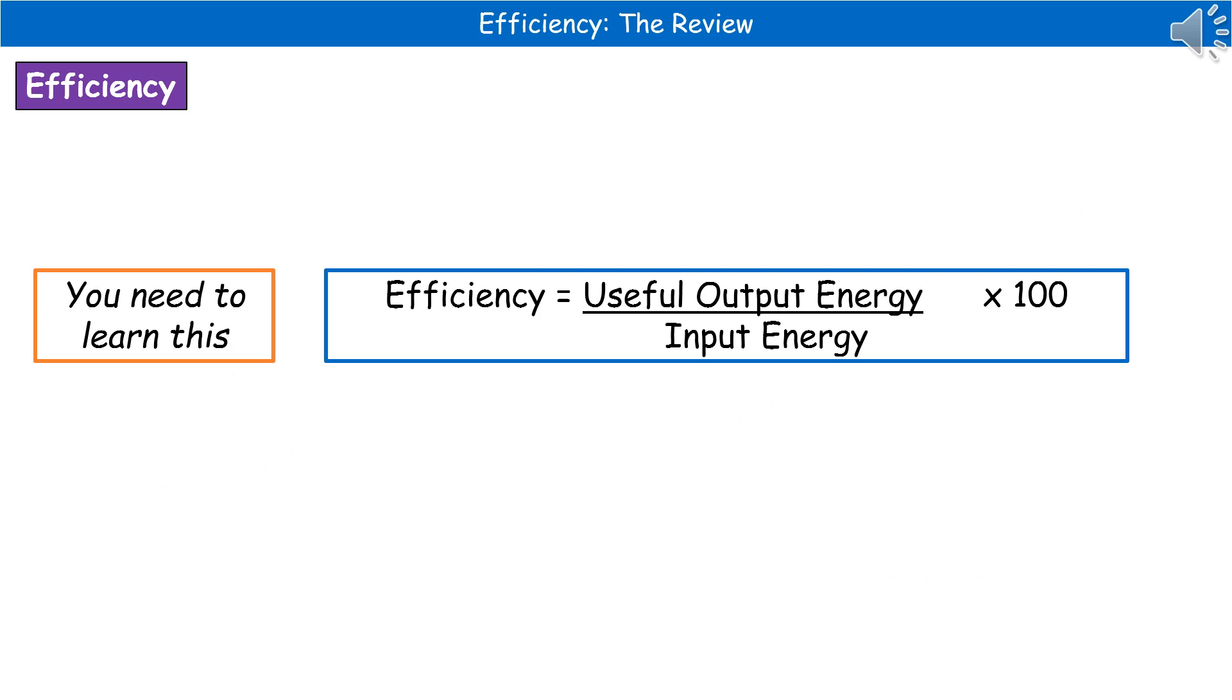There is an equation we need to learn to work out efficiency. Efficiency equals useful output energy divided by input energy. Normally we express this as a percentage, so you multiply that answer by 100.